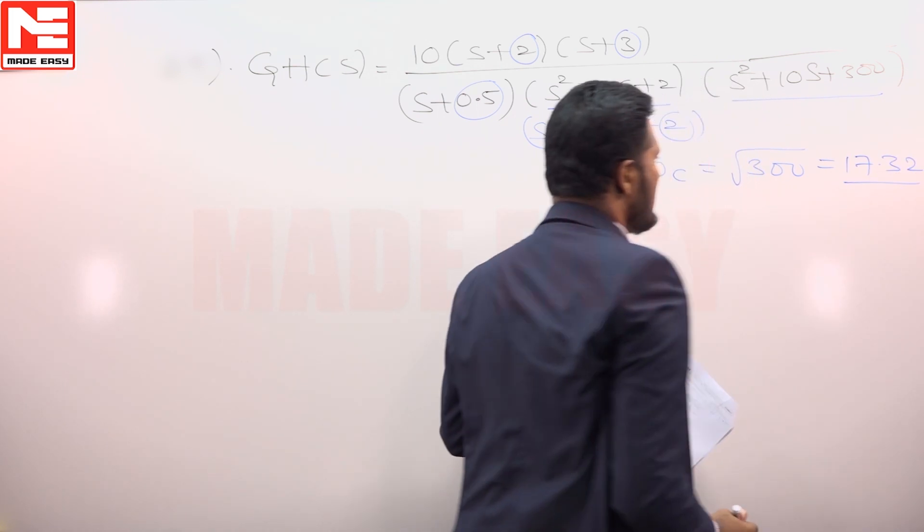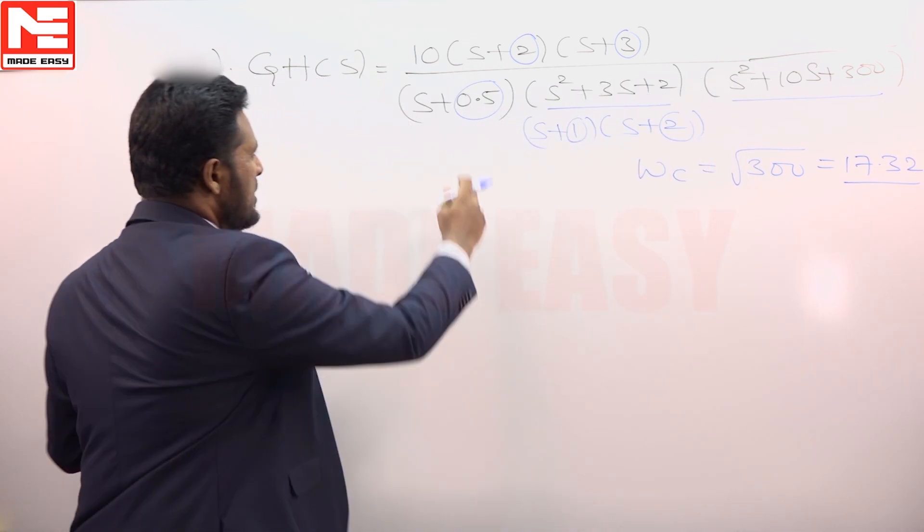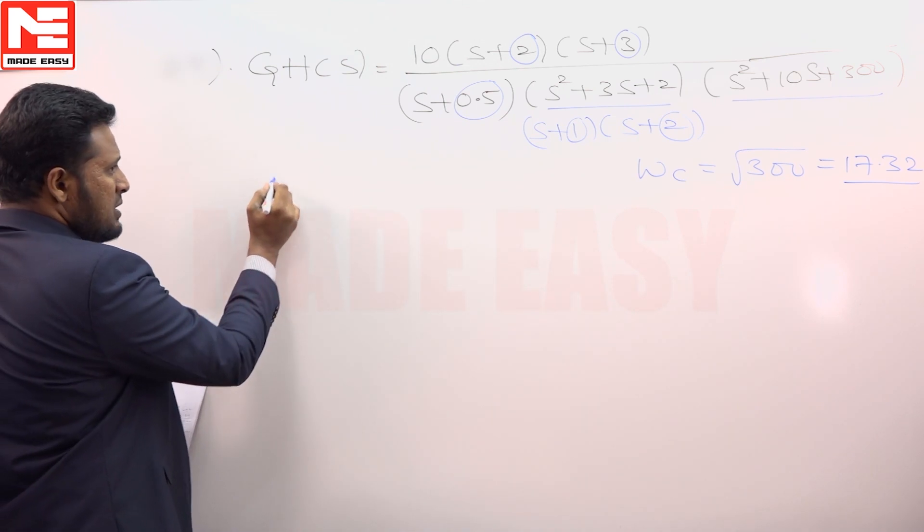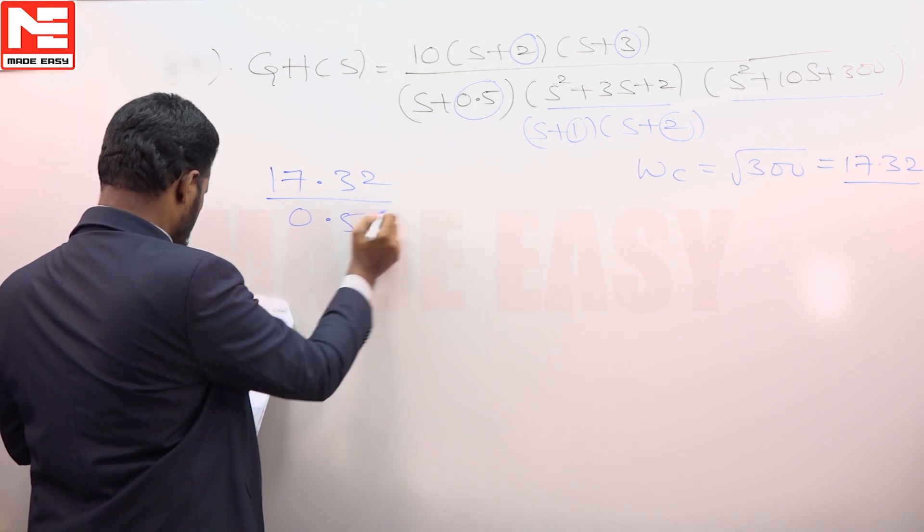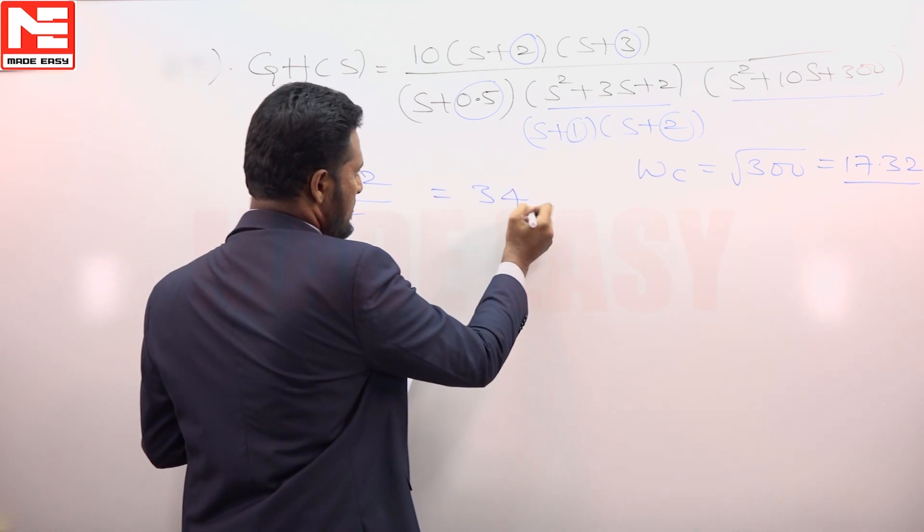So maximum corner frequency is 17.32. Minimum corner frequency is 0.5. The ratio of them is 34.64.